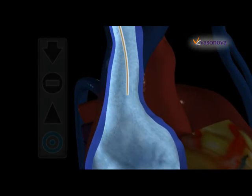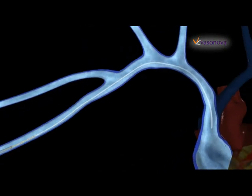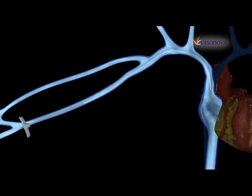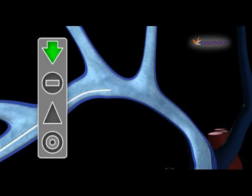Once the catheter is correctly placed in the desired location, the stylet is removed, leaving the catheter in place.